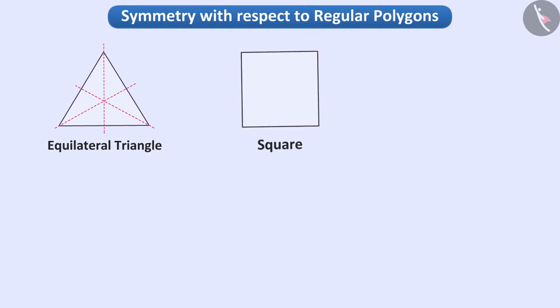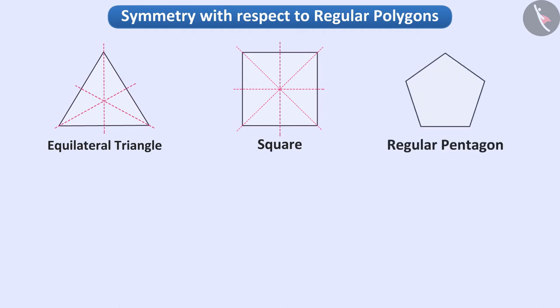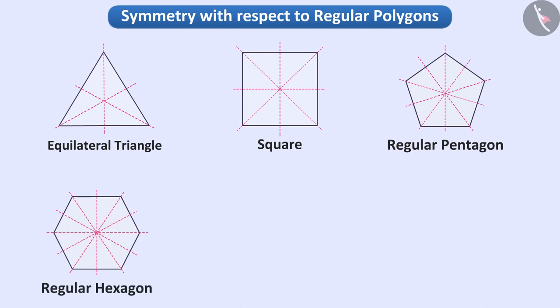Similarly, the square is also a regular polygon and thus four symmetrical lines can be drawn. Similarly, we can draw five symmetrical lines in the regular pentagon, six symmetrical lines in a regular hexagon and seven symmetrical lines in the regular heptagon.